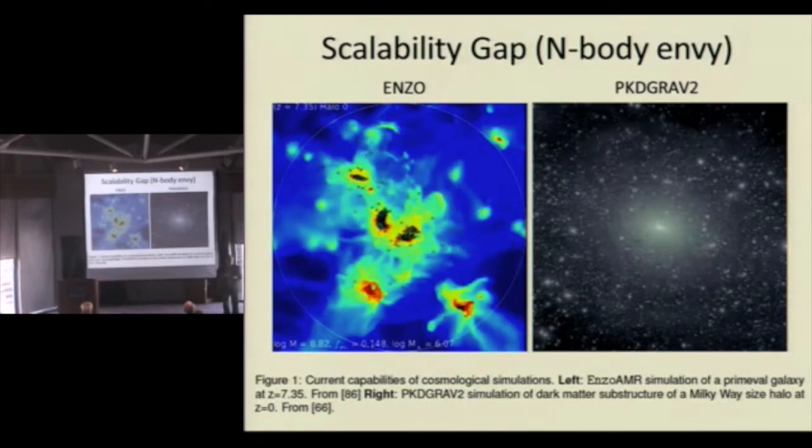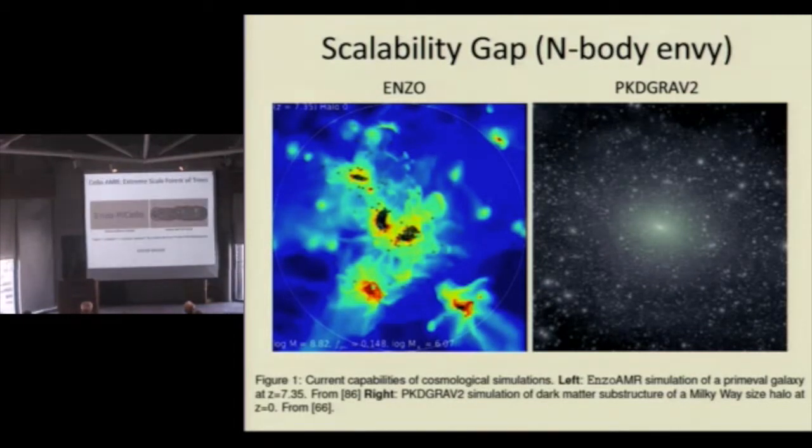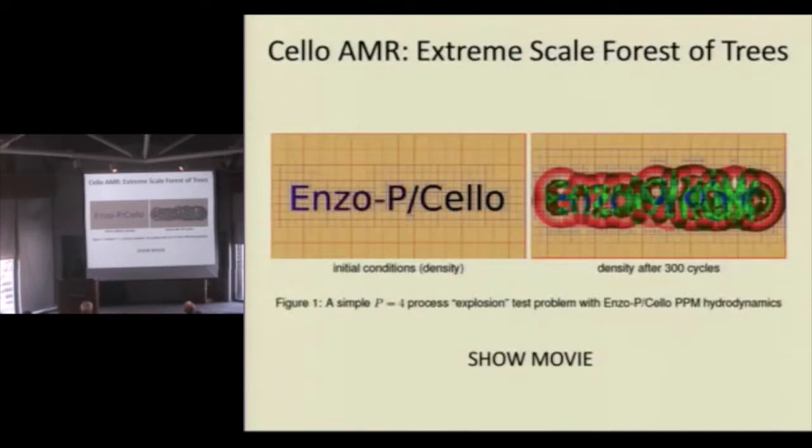And then it has this very simple physics algorithm that works on the data structure. But if you separate the physics from the data structure, you see a path forward, which is build a smart, scalable data structure for Enzo's AMR, and then migrate the physics onto that. So that's, in a nutshell, what the project is all about.